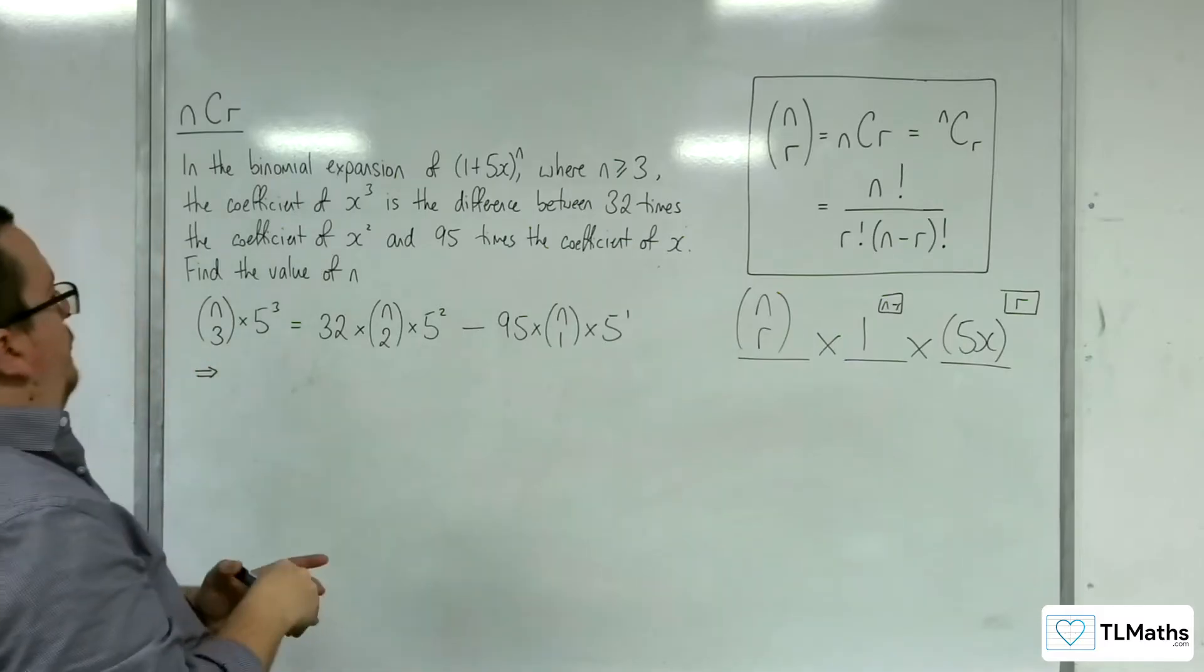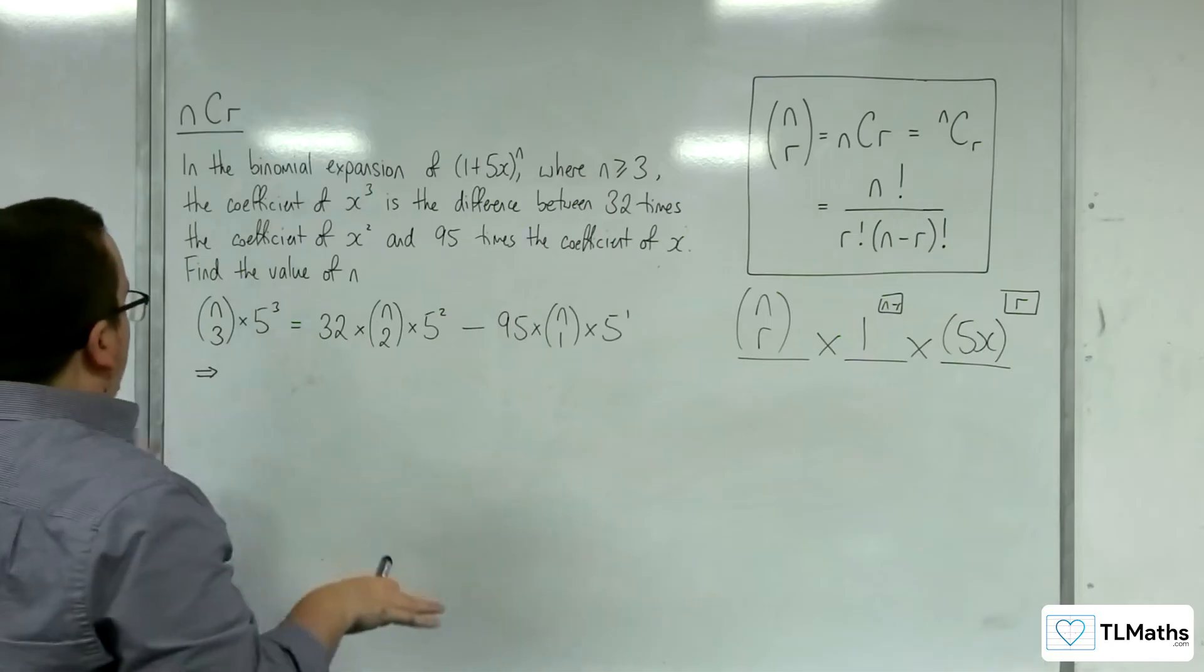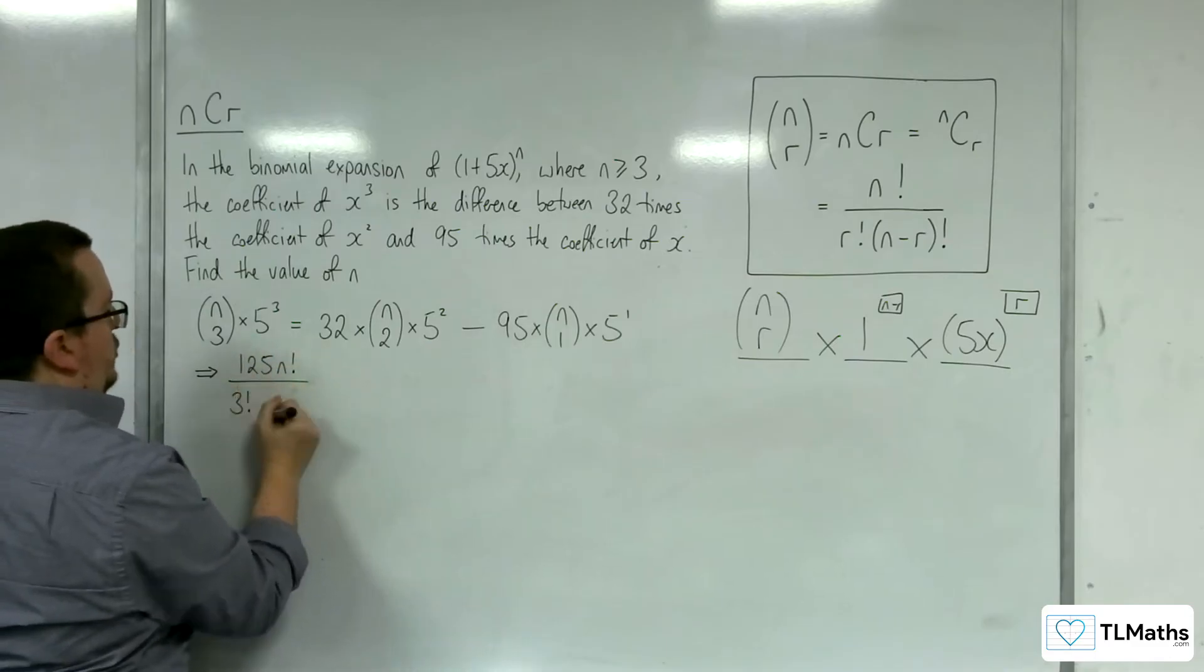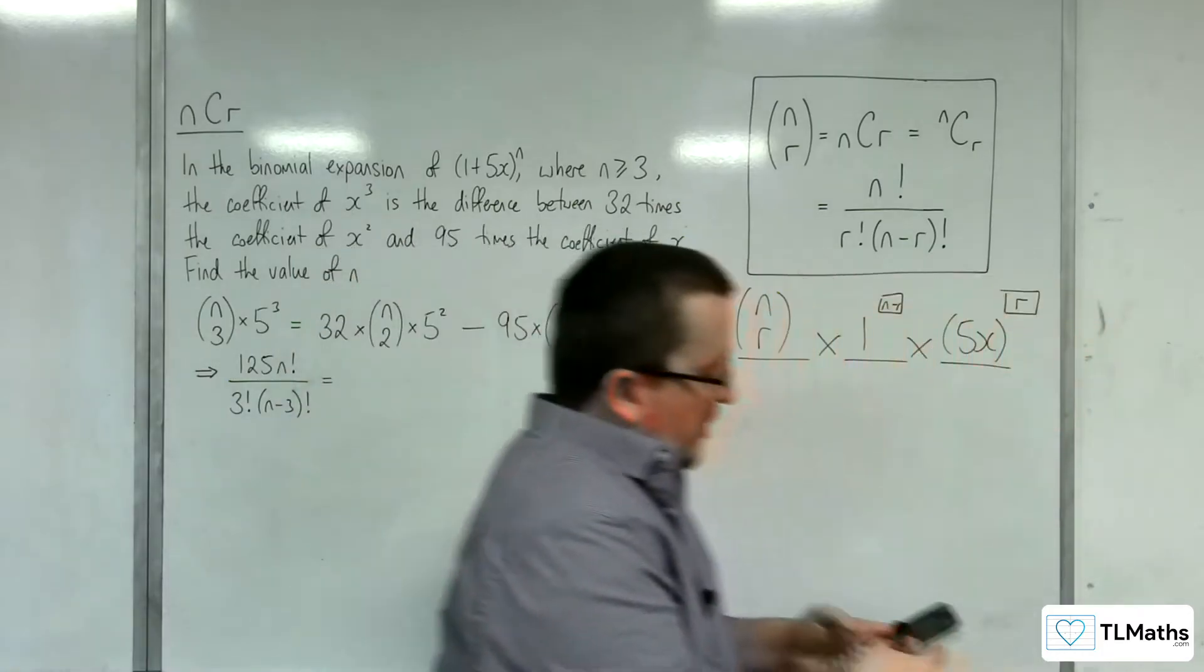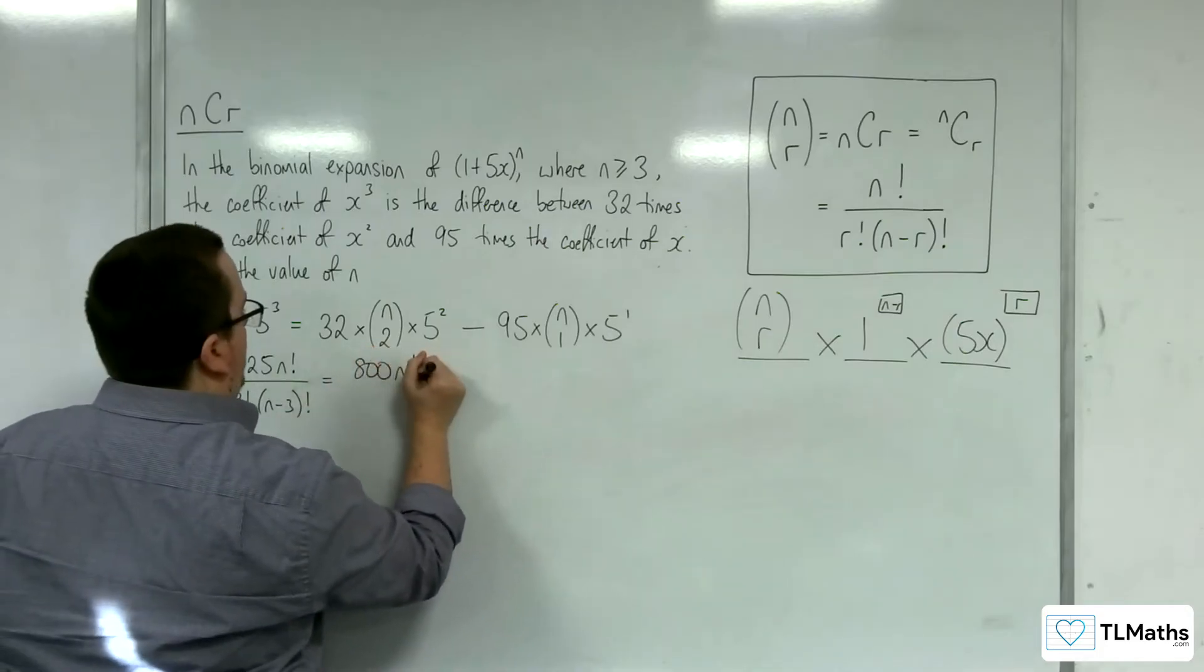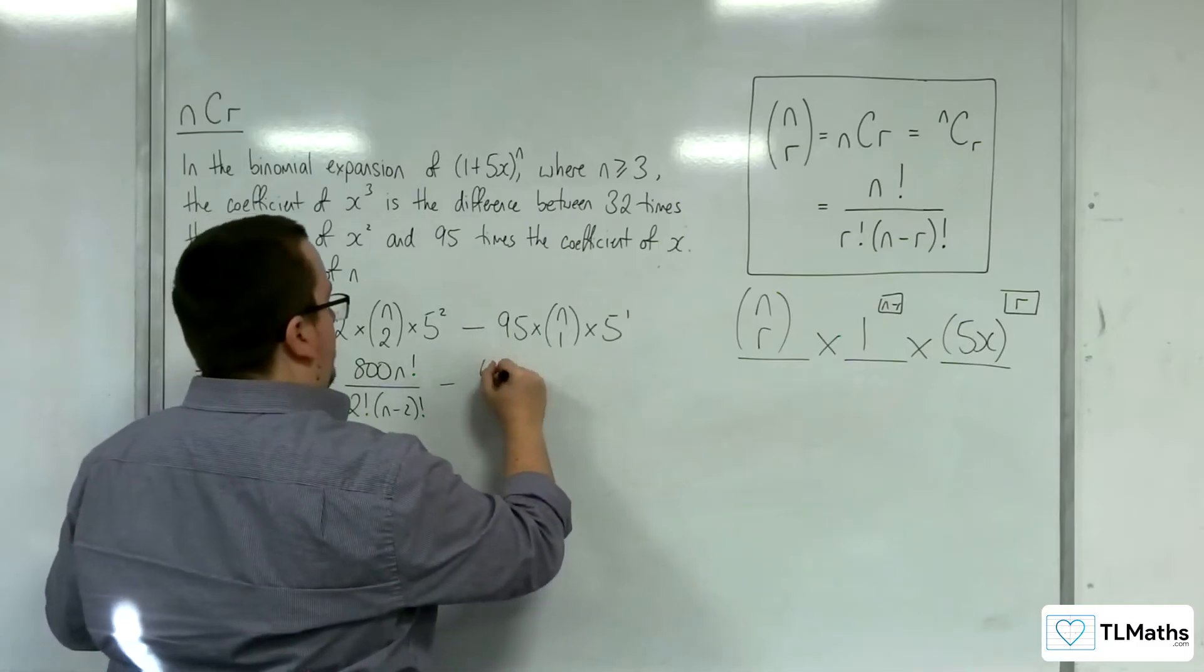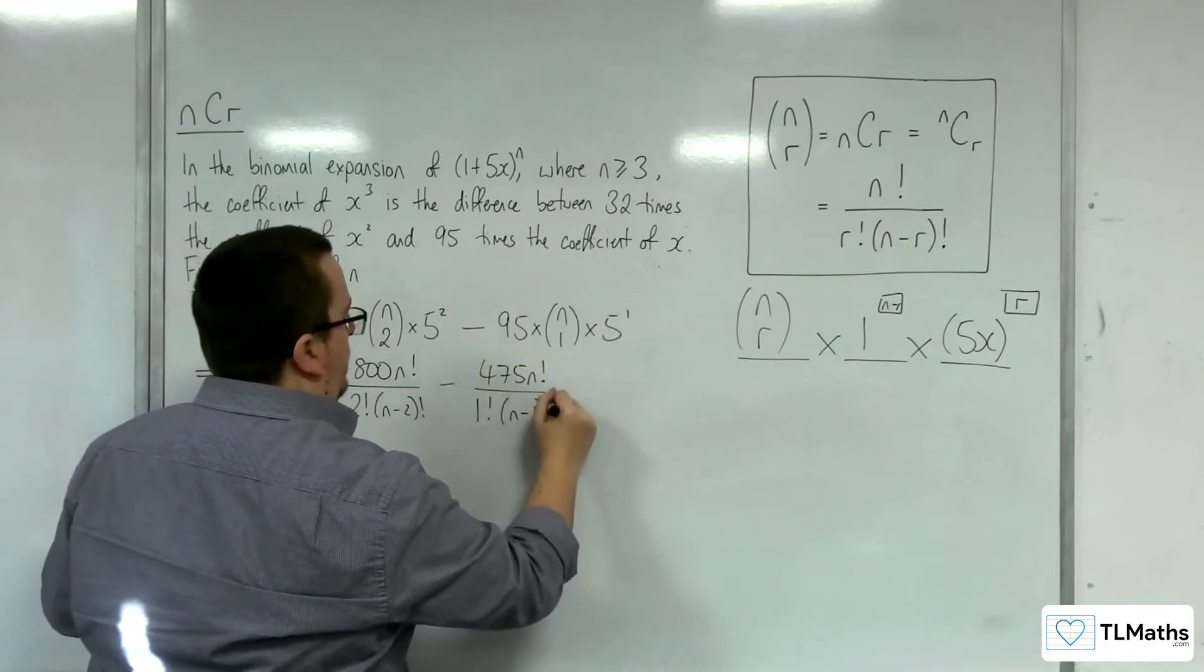Right, so first thing I could do, I could divide through by 5 first. I think I'm going to leave that for the moment. So let's deal with this first. We've got 5 cubed is 125, so we've got 125 n factorial over 3 factorial n take away 3 factorial is going to be equal to 32 times 5 squared, so 25, is 800. So 800 n factorial over 2 factorial n take away 2 factorial, then take away 95 times 5, so 475 n factorial over 1 factorial n minus 1 factorial.